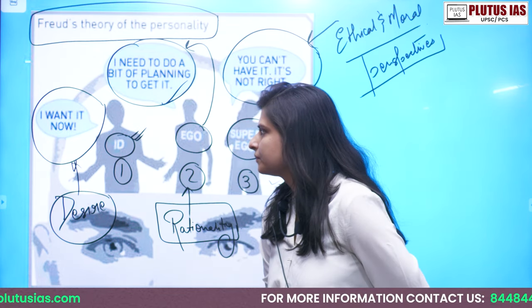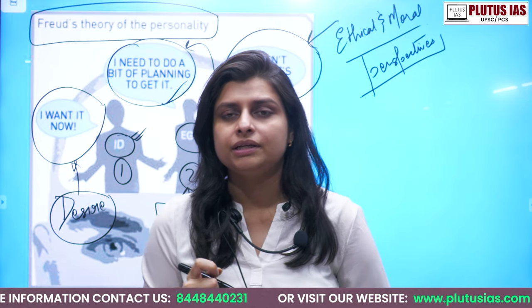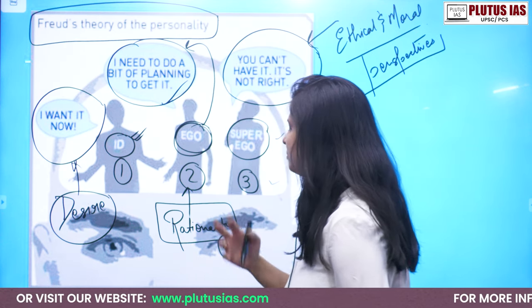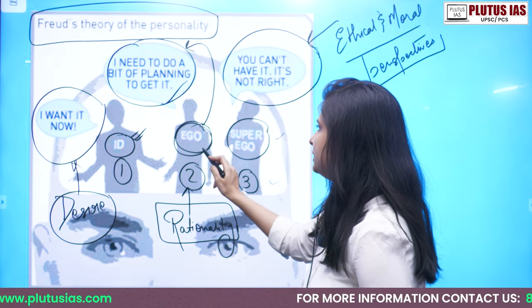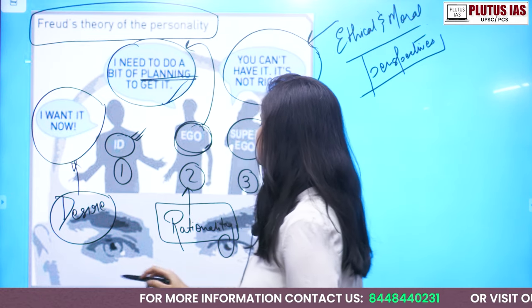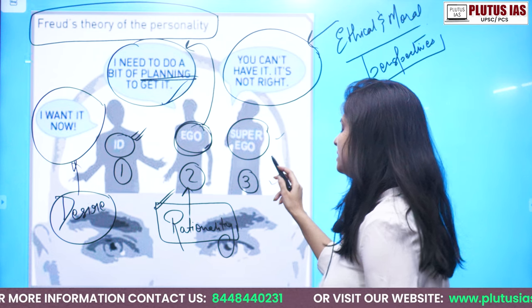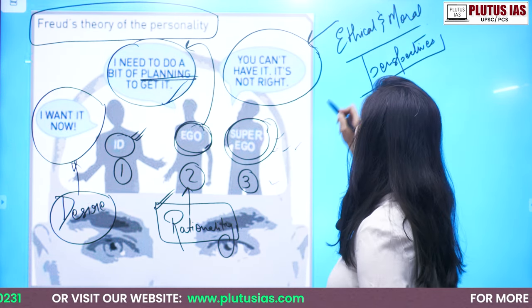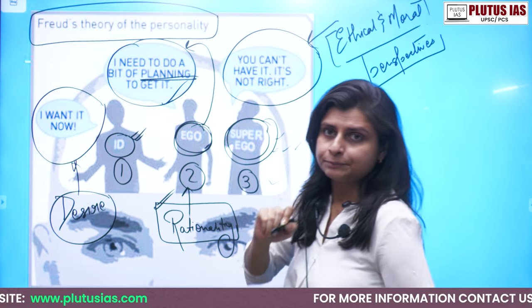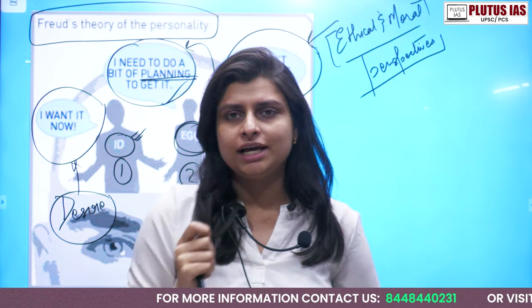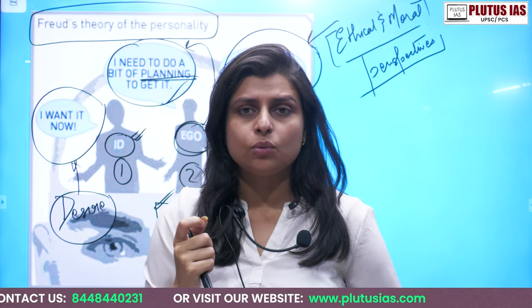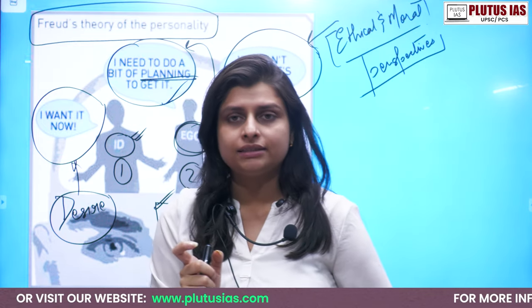The ID talks about an inner desire for something. When there is an inner desire, you want it, so the next path goes to ego. Ego talks about needing a bit of planning — this is about rationality. When the third component comes in, the super ego refers to the ethical and moral aspects. If you could visualize this, you will always find that a person — or the self — will always have this conflict in their mind.